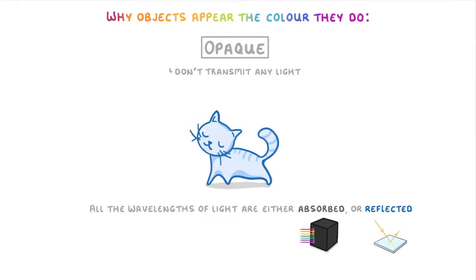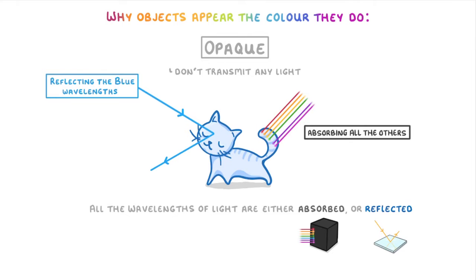So this cat appears blue because it's reflecting the blue wavelengths of light and absorbing all of the others.